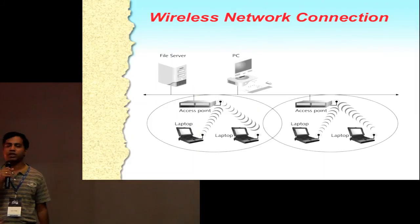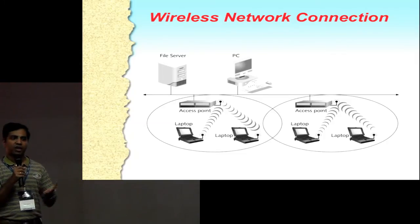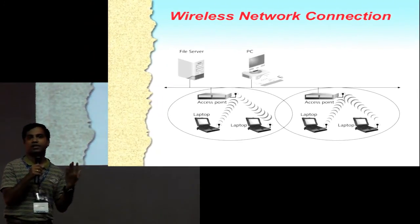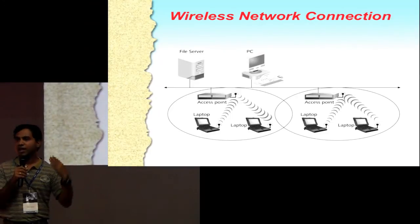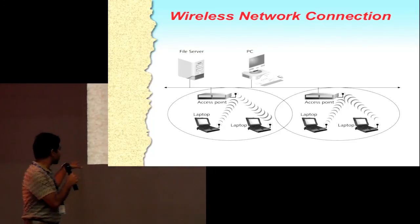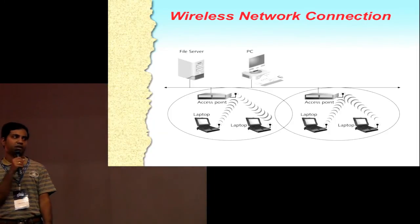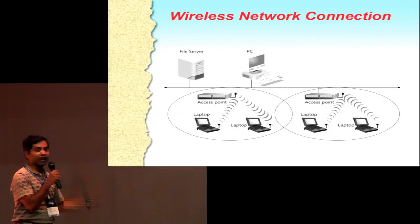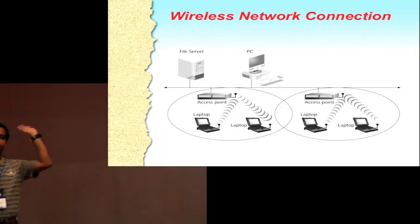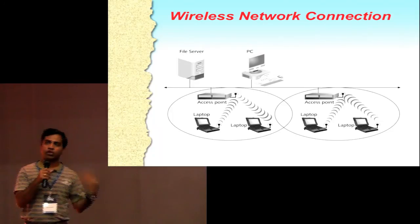Everyone here has likely connected a Wi-Fi device to a Wi-Fi access point. In general, a Wi-Fi device like a laptop connects to an access point, and the access point is connected to some uplink — a modem with the ability to connect to the internet. In an enterprise setup, you might have multiple access points whose backbone is wired to each other, with file servers and PCs connected to the internet. Devices connect to those access points wirelessly.